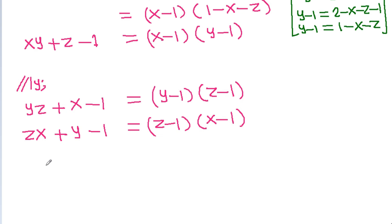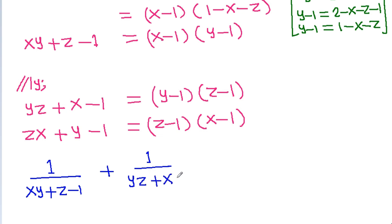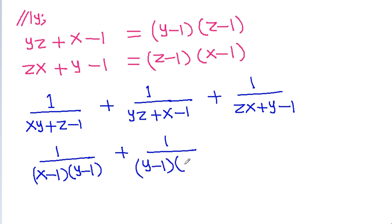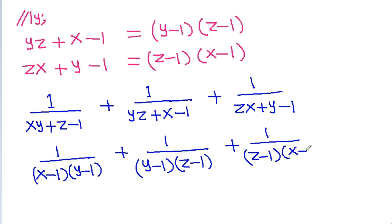And we have to find the value of 1 by xy minus g minus 1, plus 1 by yg plus x minus 1, plus 1 by gx plus y minus 1. This becomes 1 by x minus 1 times y minus 1, plus 1 by y minus 1 times g minus 1, plus 1 by g minus 1 times x minus 1.